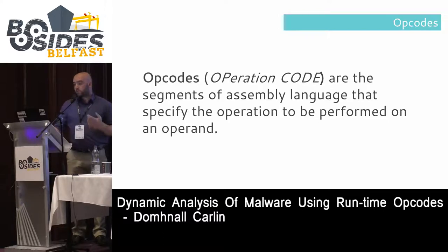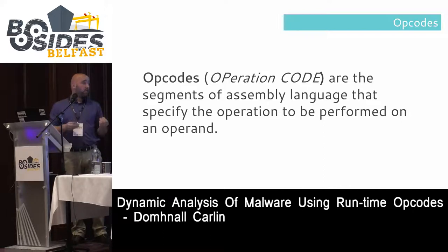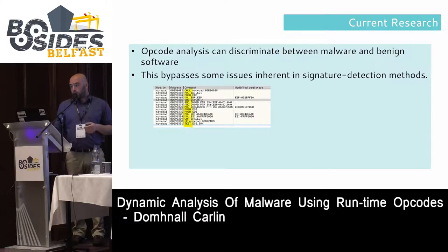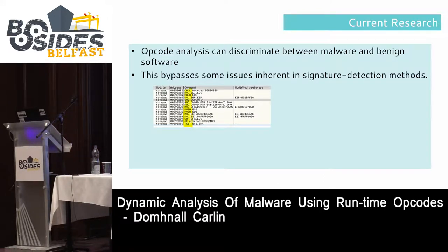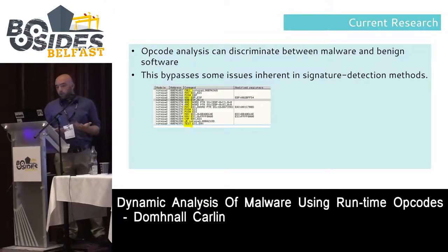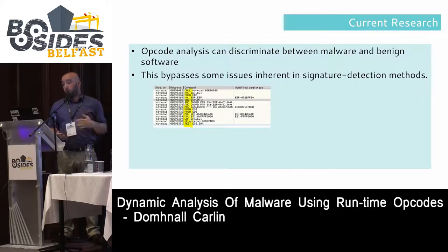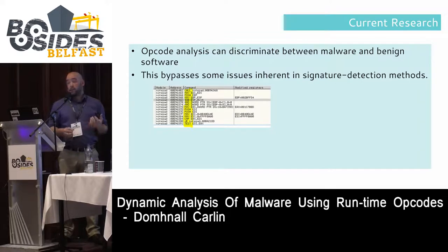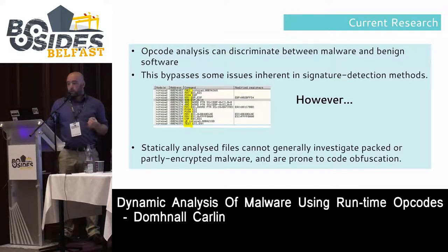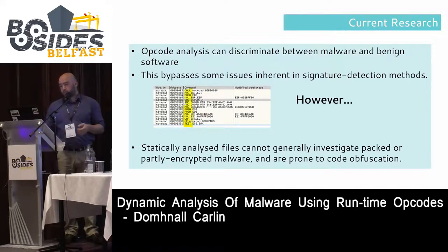What we do is opcode analysis. Opcodes — a portmanteau of 'operation code' — are the portion of assembly language that specifies the operation to be performed, essentially the human-readable version of machine language. The body of current research shows opcode analysis can discriminate between malware and benign software. However, statically analyzed files can't generally investigate packed or partly encrypted malware, and they're prone to code obfuscation such as junk insertion.